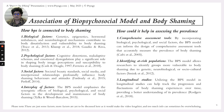Psychological factors — including cognitive distortions, maladaptive schemas, and emotional dysregulation — play a significant role in shaping body image perceptions and make individuals vulnerable to body shaming. Social factors such as societal beauty standards, social media, and interpersonal relationships profoundly influence body shaming behaviors and attitudes. The model emphasizes the need to address and take into consideration all these factors together in reducing body image disturbance and body shaming.